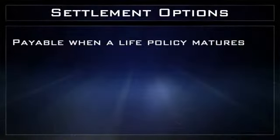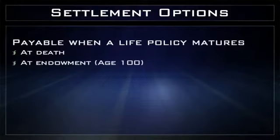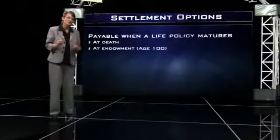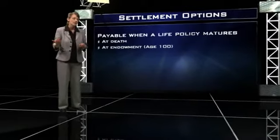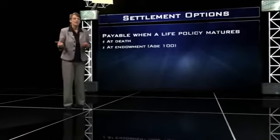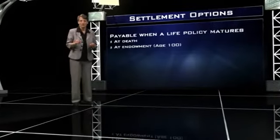A policy can mature in either of two ways. Either the insured dies and the beneficiary receives the death benefit, or the insured lives until the endowment age, which in the case of a whole life policy is age 100. The policy owner chooses the settlement option prior to the death of the insured, but if the policy owner did not choose an option, then it would be up to the beneficiary to choose that option if they want to.